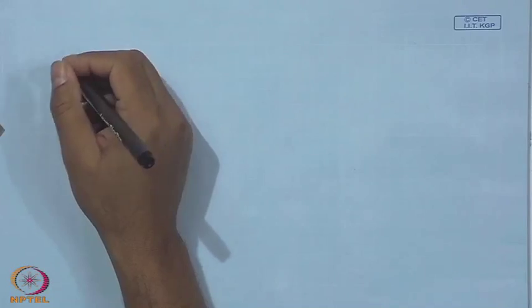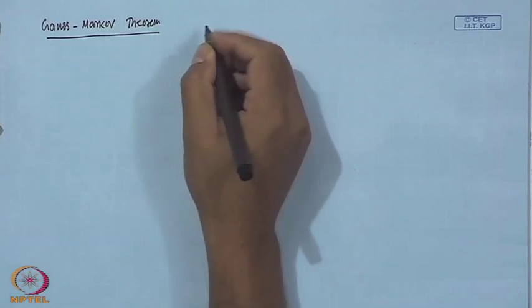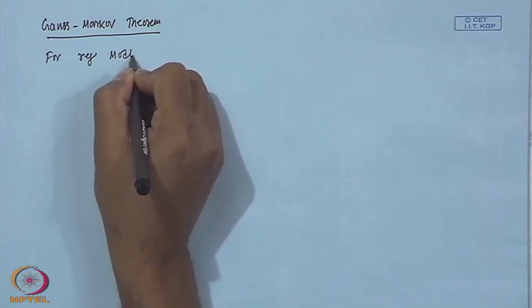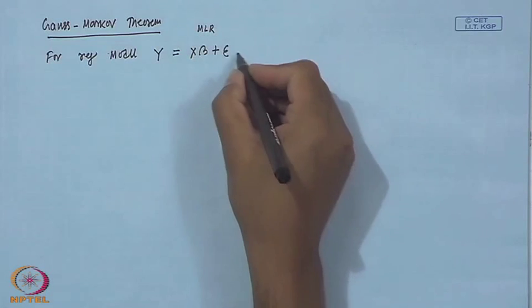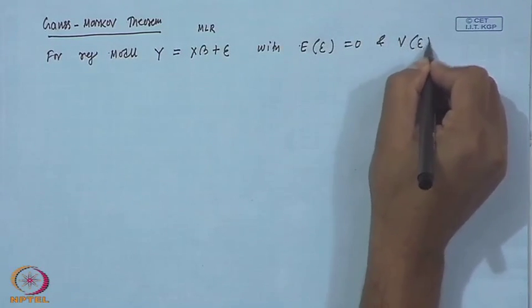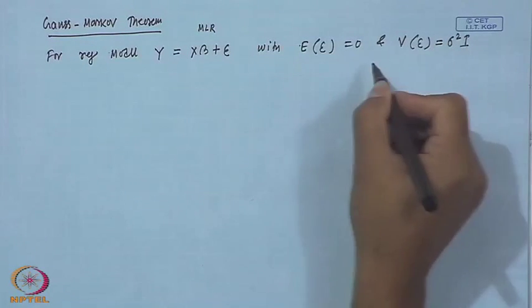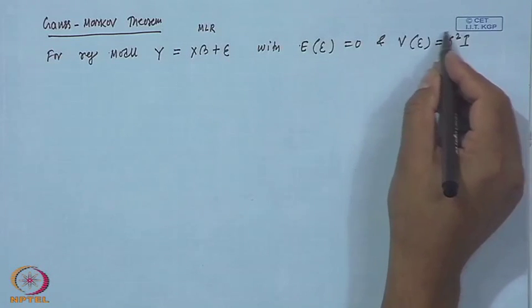I need some prerequisite to talk about generalized least square. The first is called the Gauss-Markov theorem. This theorem says that for a regression model y = Xβ + ε with expectation of ε equal to 0 and variance of ε equal to σ²I — meaning it satisfies the basic assumptions of the multiple linear regression model: constant variance, expectation 0, and uncorrelated errors.